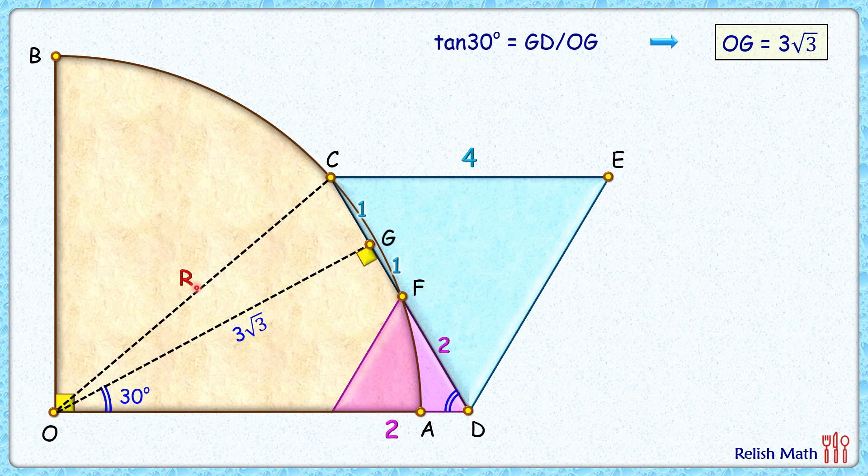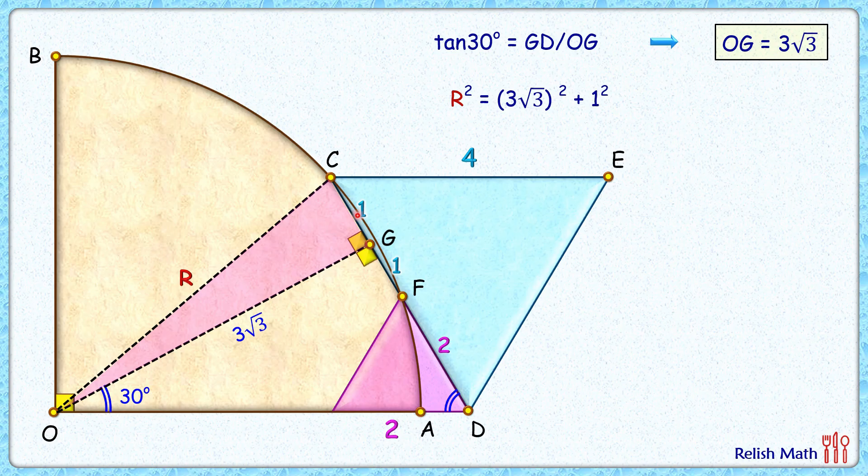Now let's join OC. Here OC is nothing but the radius of this quadrant. In this triangle COG, angle G is 90 degrees, so applying Pythagoras theorem in this right angle triangle, we get R squared is 1 squared plus 3 root 3 squared.